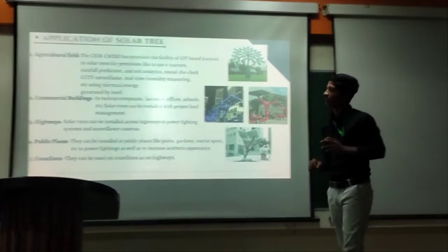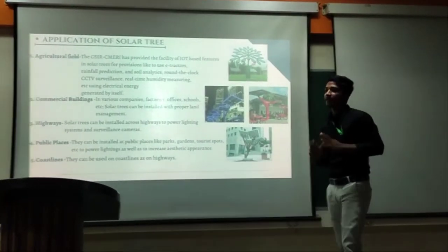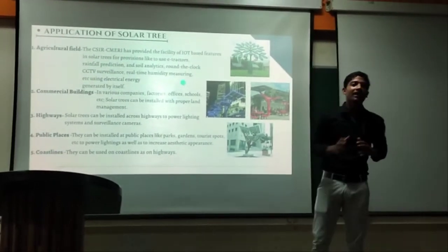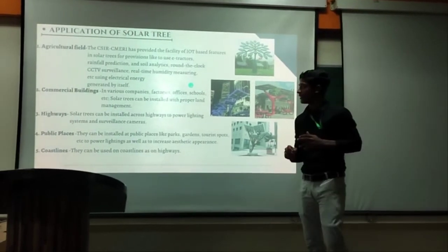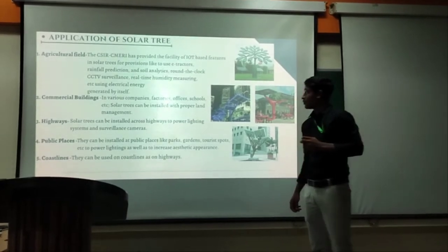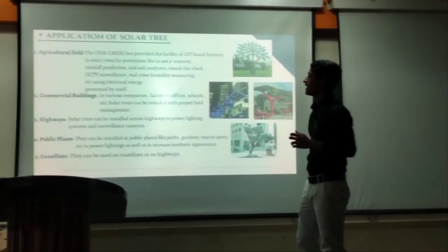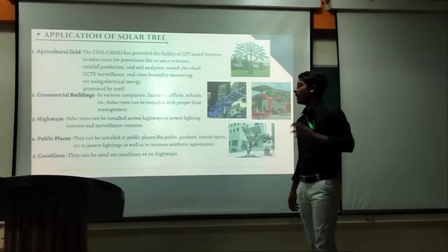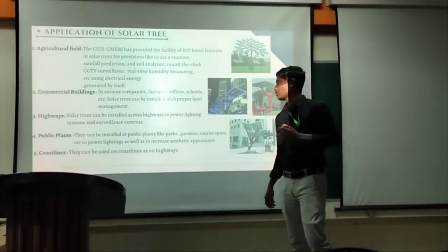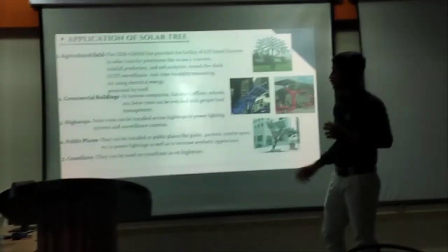Second, commercial buildings: in various companies like factories, offices, schools, etc., solar trees can be installed for global land management. Third, highways: solar trees can be installed across highways to power lighting systems and surveillance cameras. Fourth, public places: they can be installed at public places like parks, gardens, food spots, etc., to power lighting as well as to increase aesthetic appearance. Fifth, coastlines: they can be used on coastlines in the same way as on highways.